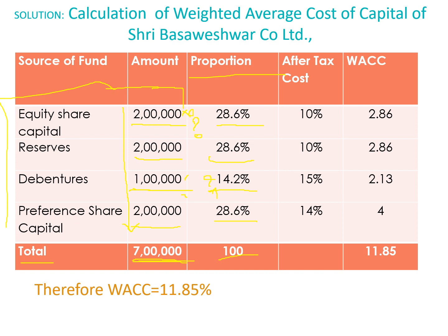Then, what you have to verify is that by adding all these proportions you must get 100 — the total must be 100, then only your calculation is right, otherwise you have to check once more. After that, the 4th column is the after-tax cost column, which is already provided in the problem, so write it down as it is: equity share capital 10%, reserves 10%, debentures 15%, and preference share capital 14%.